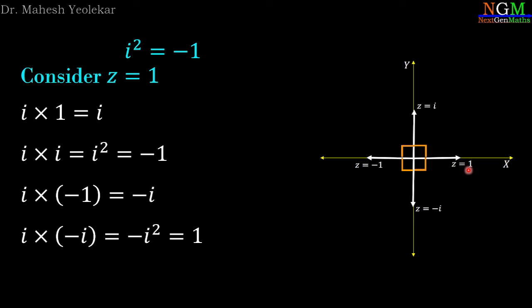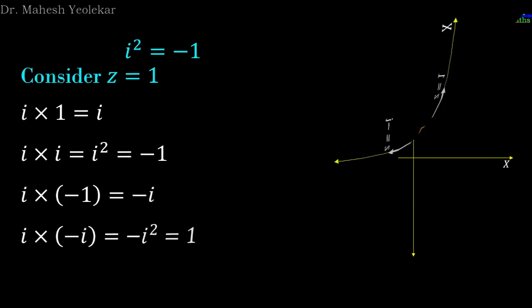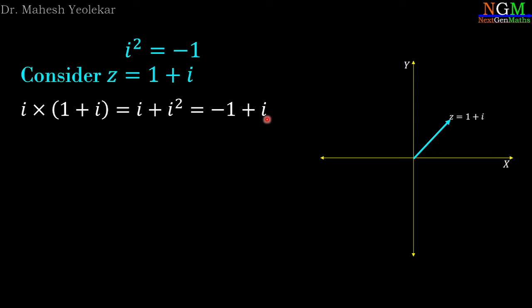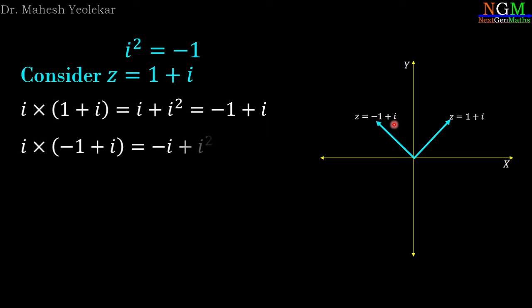To understand this concept further, we will see one more example. Consider the complex number z = 1 + i. Plotted on the complex plane, it lies in the first quadrant. We multiply z = 1 + i by i, then we have -1 + i. Now -1 + i lies in the second quadrant. Further we multiply -1 + i by i, then we have -i + i² = -i + (-1), giving us -1 - i, which lies in the third quadrant.